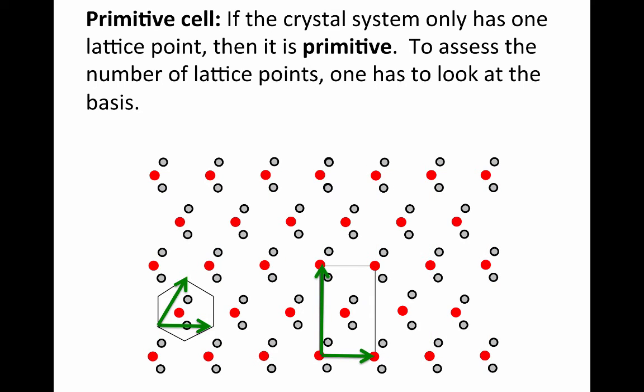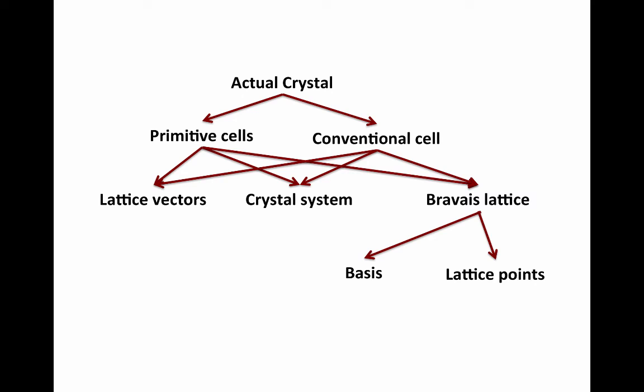So if the crystal system has only one lattice point, then it's a primitive system. To assess the number of lattice points, you have to look at the basis. This business is a bit complicated. There's a lot of nested and hierarchical statements, and causality is not always obvious.